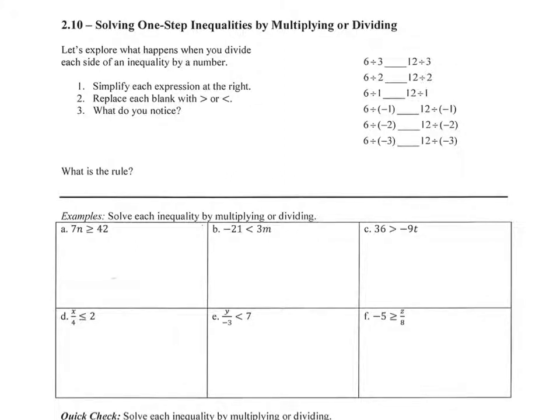Let's look at what happens when you divide each side of an inequality by a number. So if you have 6 divided by 3, that's 2, and 12 divided by 3, that's 4. 2 is less than 4.